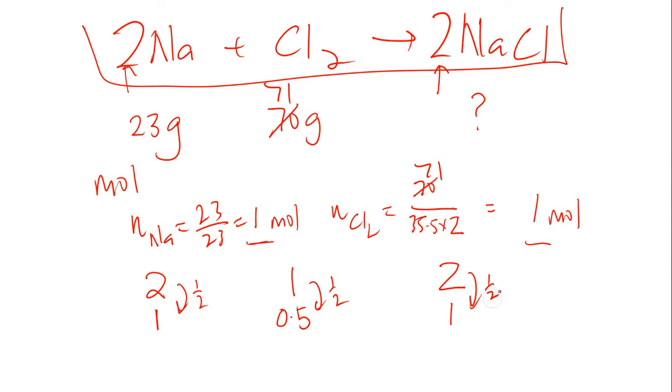Why is it half? Because I only have 1 mole of sodium. How many moles of chlorine do I have? I have 1 mole. Which means I actually have 0.5 extra of chlorine and this is called excess.